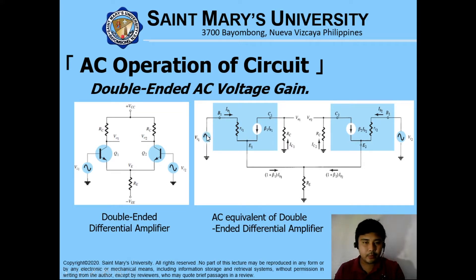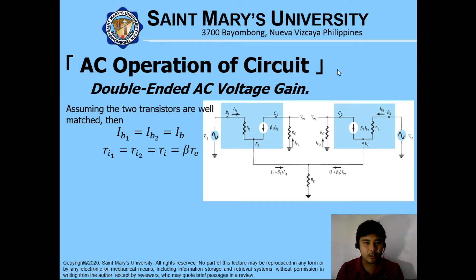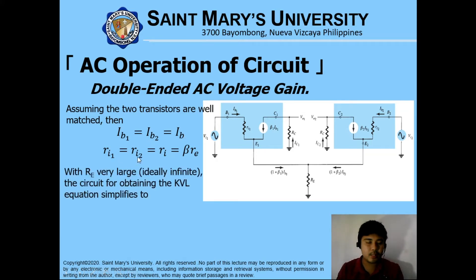Notice, however, that again we have two inputs rather than one. Now, assuming that the two transistors are well-matched — well-matched means that they have been fabricated from the same silicon wafer — we define that IB1 and IB2 are equivalent to IB, and input resistance RI1 equals RI2 equals RI, which in turn equals beta times RE1. Considering that RE1 is very large, it becomes an open circuit.